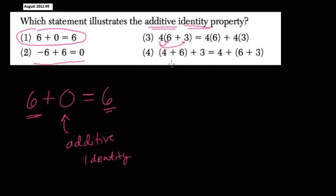4 is an example of the associative property. It would be commutative if you change the order, like 4 plus 3 plus 6. That would be commutative. It wouldn't change, but the order changes.